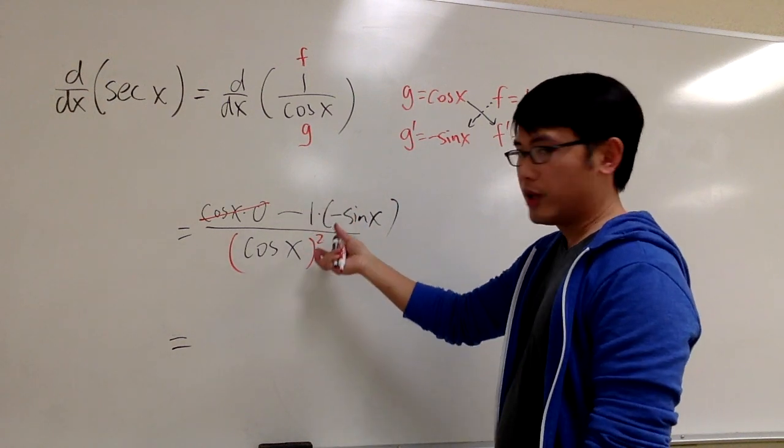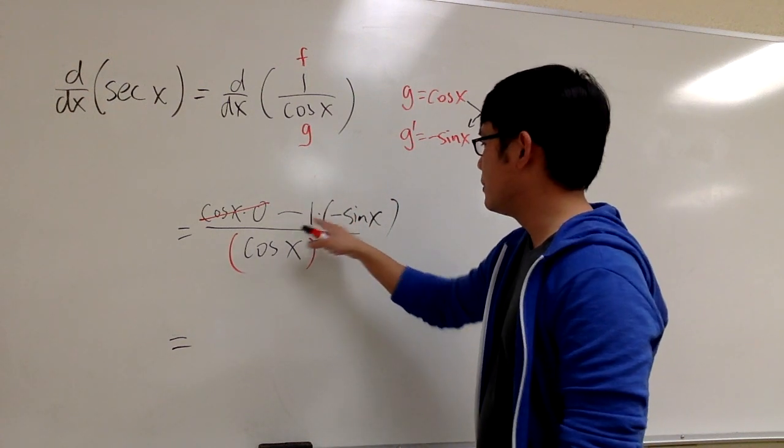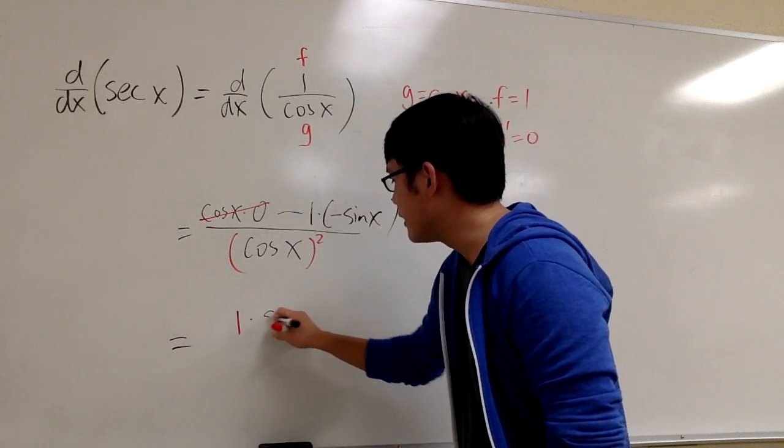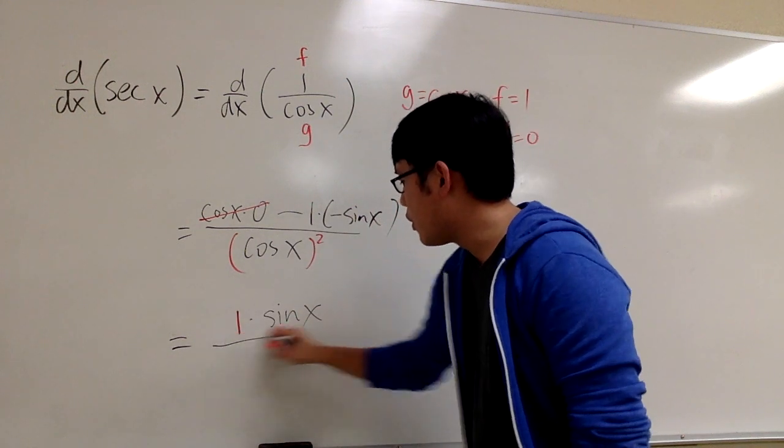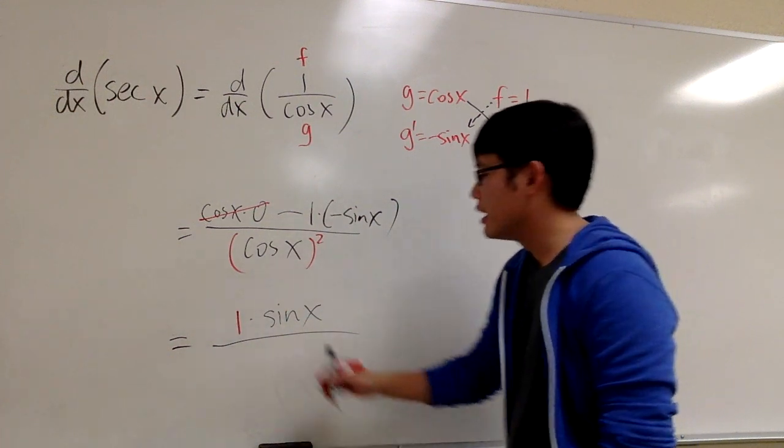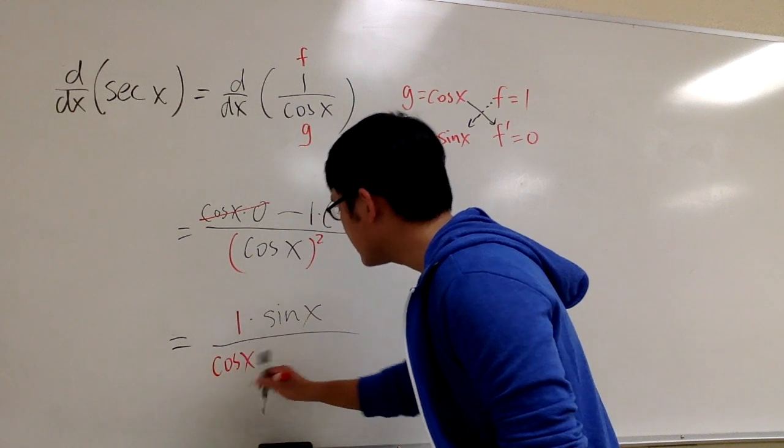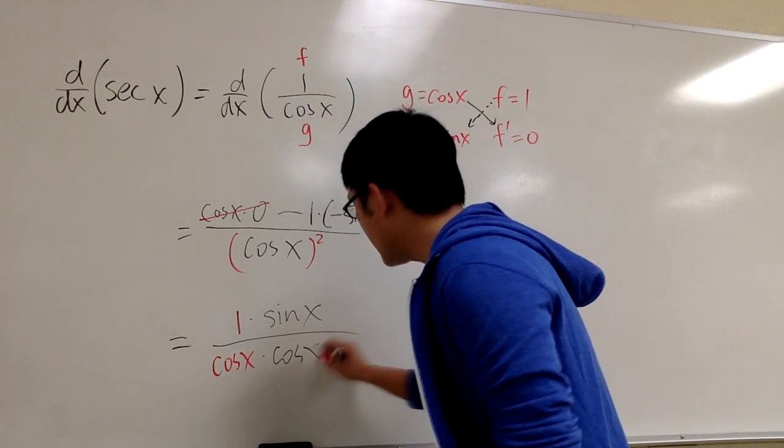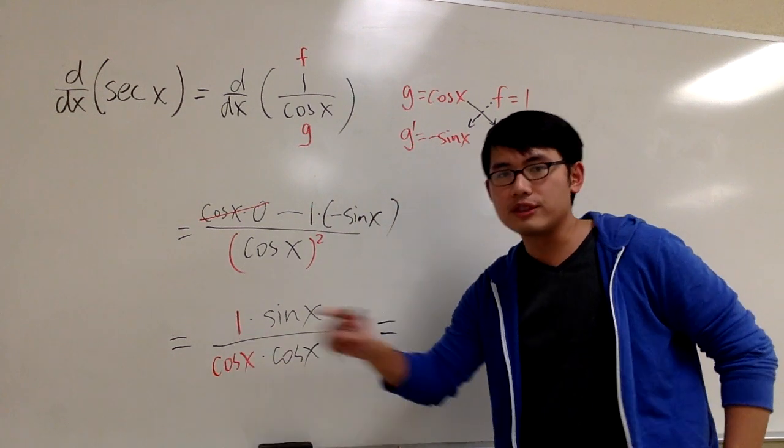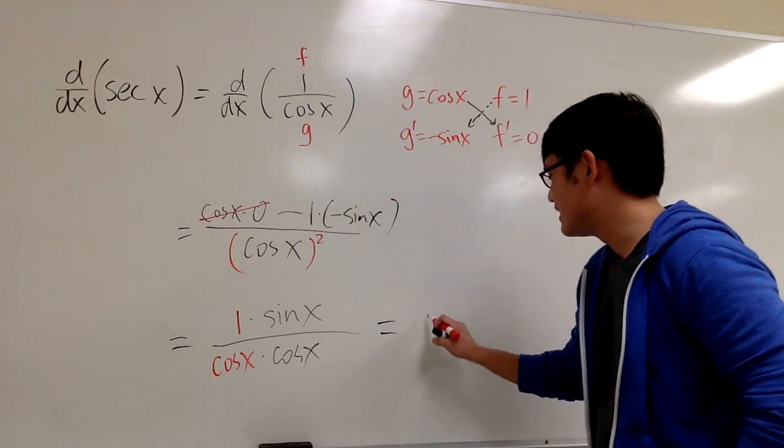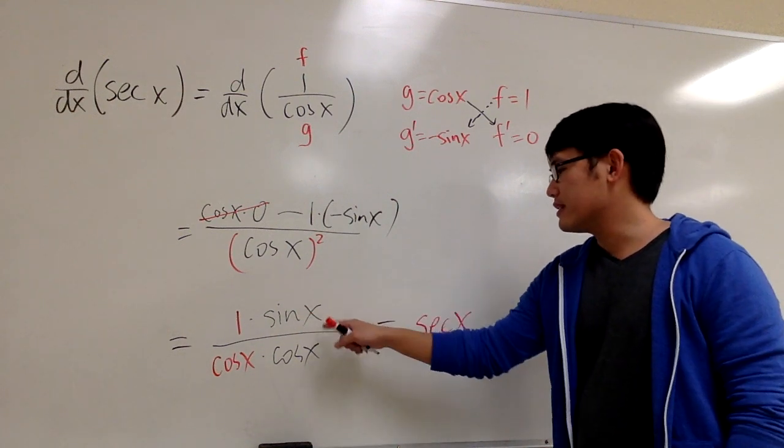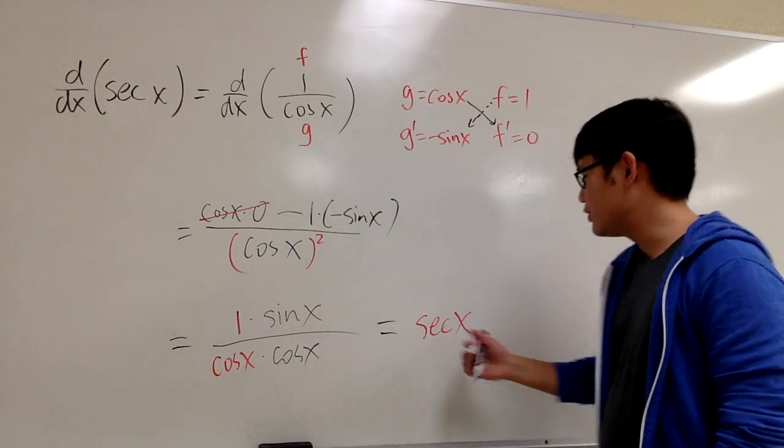So a few things that we can do right here. Let me just write this down as 1 times sine x. 1 in red, and then the sine x in black. Over, we have cosine x times cosine x on the denominator. Let me put one of the cosine x in red, and then another cosine x in black. Because when I do that, we see 1 over cosine is what? It's secant x. And what's sine x over cosine x? That's tangent x.